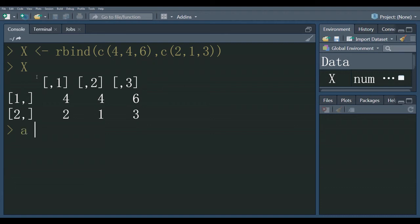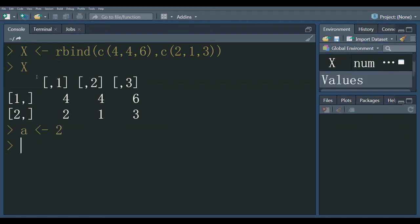Suppose A is a scalar having value 2. Now we want to perform scalar multiplication, multiplying the scalar with the matrix.